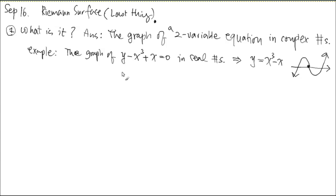These two variables, x and y, each take up one real axis, so together they span two dimensions — the Cartesian product of two real lines. But when you do the graph of a two-variable equation in complex numbers, one complex number already takes up two real dimensions. To represent the other complex variable you need another two real dimensions. Altogether, that's four dimensions — you can't really visualize it. That's the whole problem.